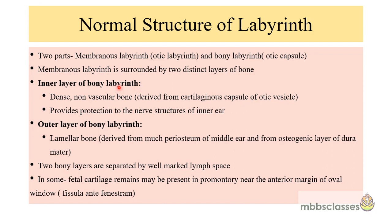The bony labyrinth has two layers: an inner layer and an outer layer. The inner layer is a dense non-vascular bone derived from the cartilaginous capsule of the otic vesicle, providing protection to the nerve structures of the inner ear. The outer layer of the bony labyrinth is lamellar bone. Between these two bony layers is located the well-demarcated limb space. The bony labyrinth ossifies from numerous centers, and when fetal cartilage remains in some patients, it becomes a potential site for development of the otosclerotic focus.